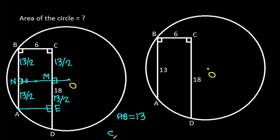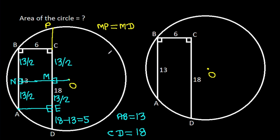We have CD is 18, that means DE will be 18 minus 13, which is 5. If we extend DC, suppose this point is P, then MP equals MD, and MD is 13 over 2 minus 5, which means CP will also be 5. So if we extend DC to point P, then PC will be 5.